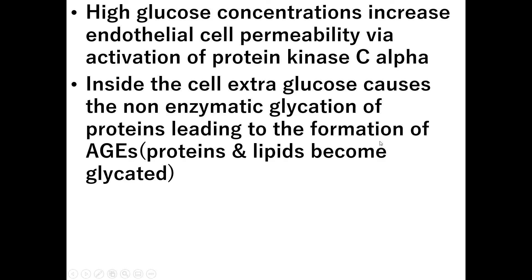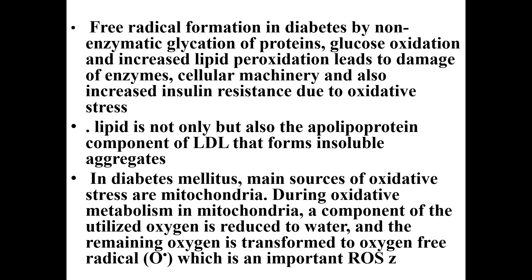High glucose concentration increases endothelial cell permeability and activates protein kinase C alpha inside the cell. Extra glucose causes non-enzymatic glycation of proteins and lipids, leading to the formation of AGEs — advanced glycation end products. Free radical formation is very common in diabetes. The main source of oxidative stress is the mitochondria — during oxidative metabolism, a component of utilized oxygen is transformed into oxygen free radicals, an important reactive oxygen species.